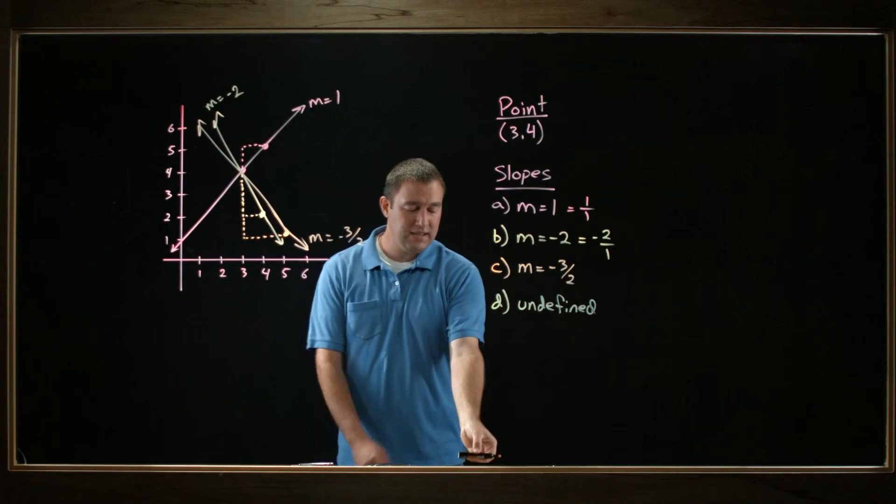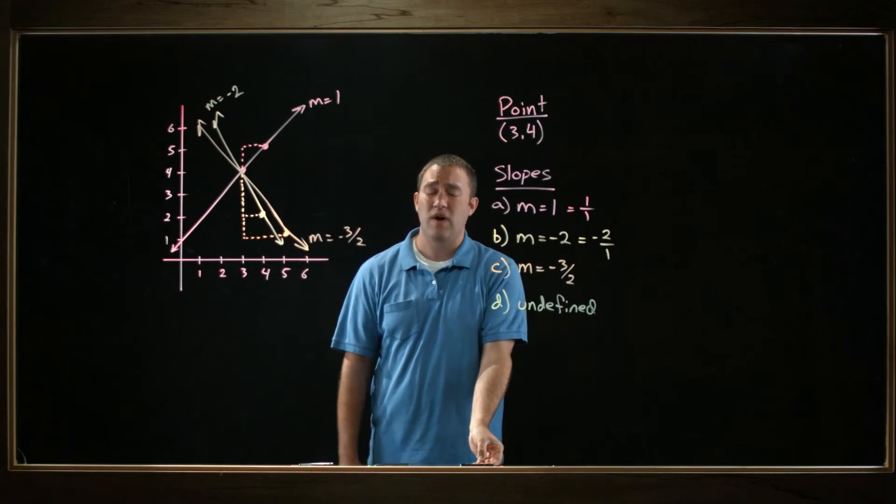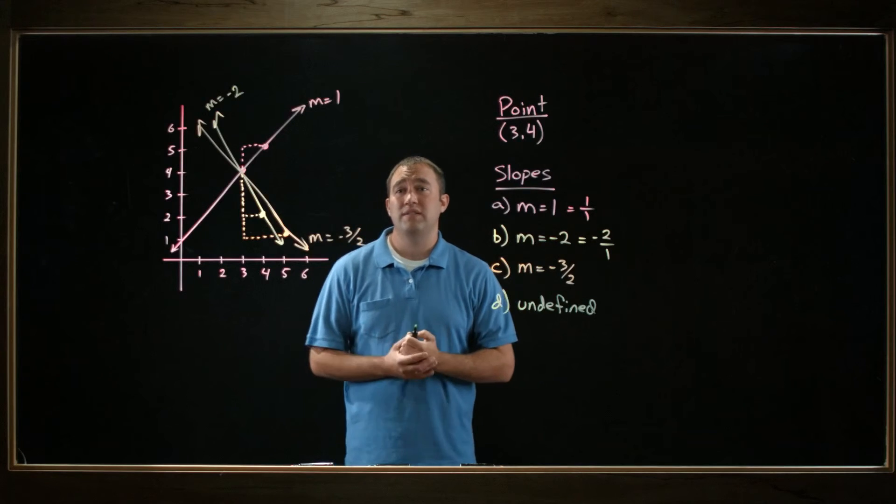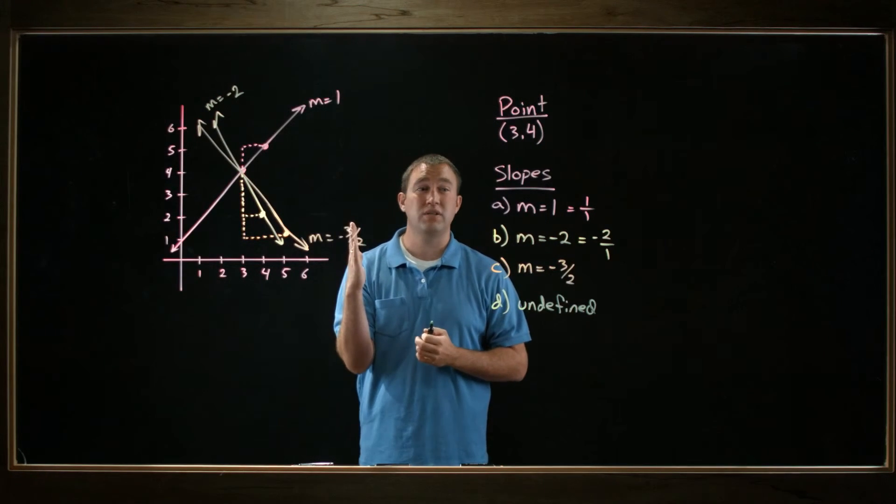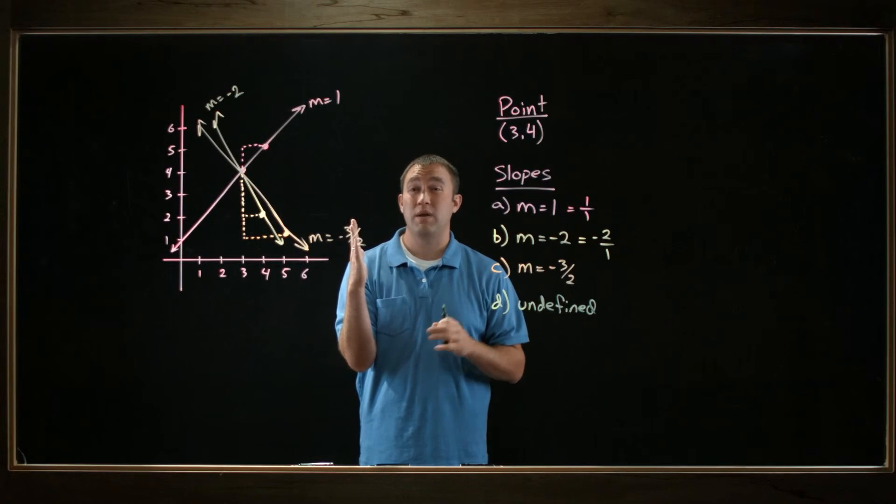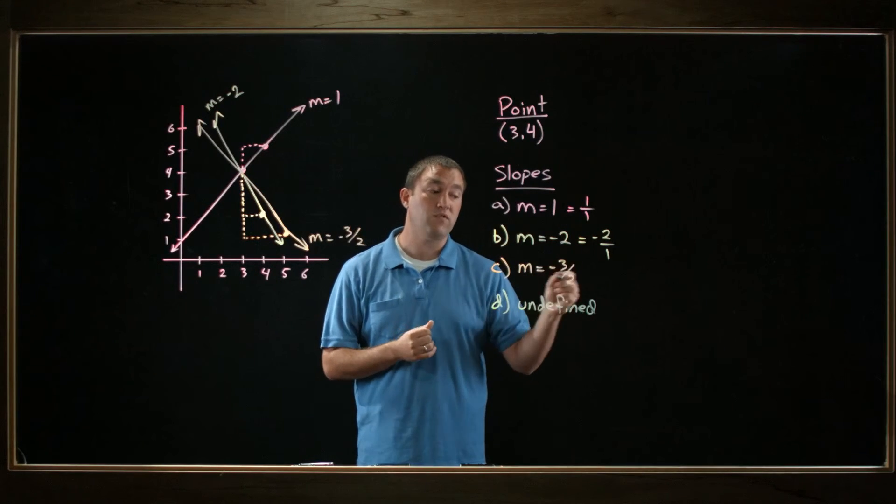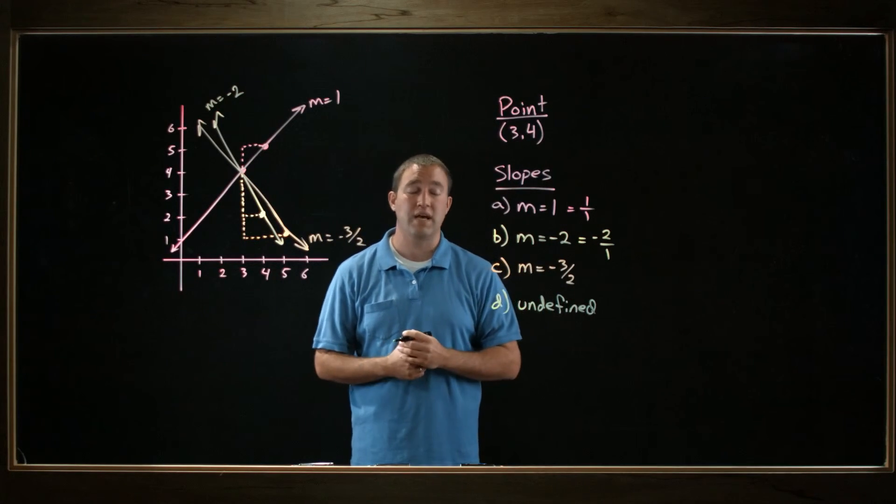OK. The last line that I'm asked to draw has an undefined slope. So if I've got a straight line with an undefined slope, the only way that happens is if it's a straight vertical line, because there's no rise over run because the run is 0. The bottom of my ratio would be 0, and that's not defined.